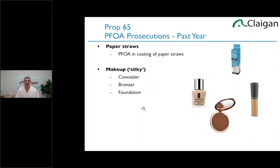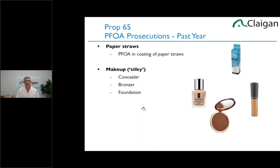Here's a fun example. PFOA — perfluorooctanoic acid — which gets lots of press these days from the movie Dark Waters and the 'Forever Chemical' coverage, was added to Prop 65 a couple of years back. The prosecutions are fascinating and surprising. The main prosecutions this year are paper straws. Paper straws don't hold water well, so to make them work you have to add a waterproof coating — normally a fluoropolymer. If you use the wrong additives in the fluoropolymer, you end up with PFOA. Most prosecutions this current year are actually paper straws that have a fluoropolymer coating.